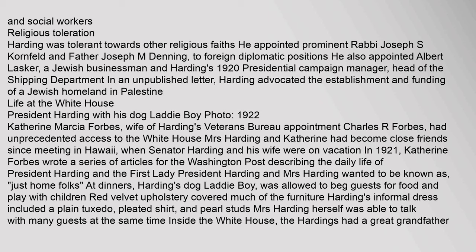Catherine Forbes, wife of Harding's Veterans Bureau appointment Charles R. Forbes, had unprecedented access to the White House. Mrs. Harding and Catherine had become close friends since meeting in Hawaii. In 1921, Catherine Forbes wrote a series of articles for the Washington Post describing the daily life of President Harding and the First Lady. President Harding and Mrs. Harding wanted to be known as just 'home folks.' At dinners, Harding's dog Laddie Boy was allowed to beg guests for food and play with children.